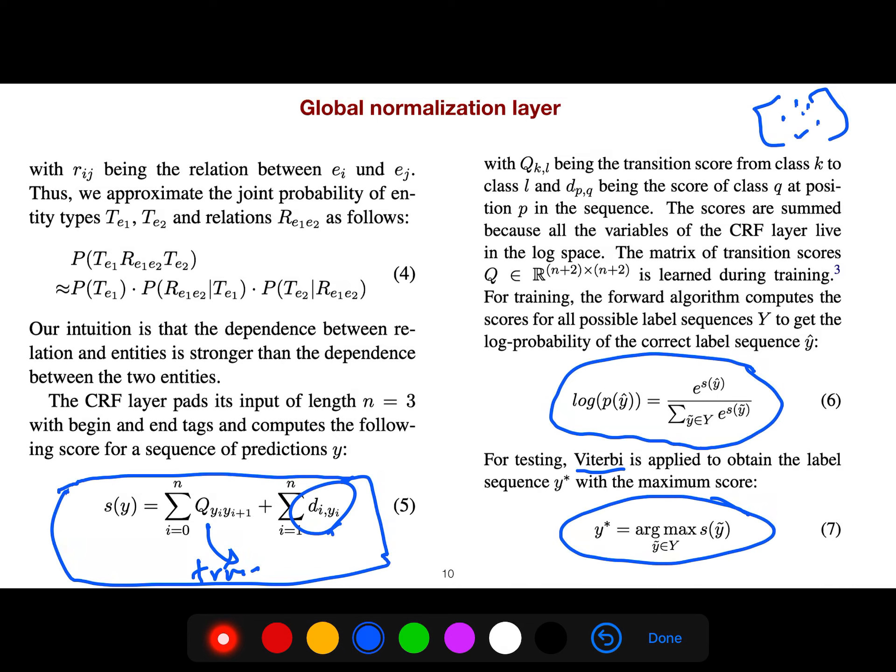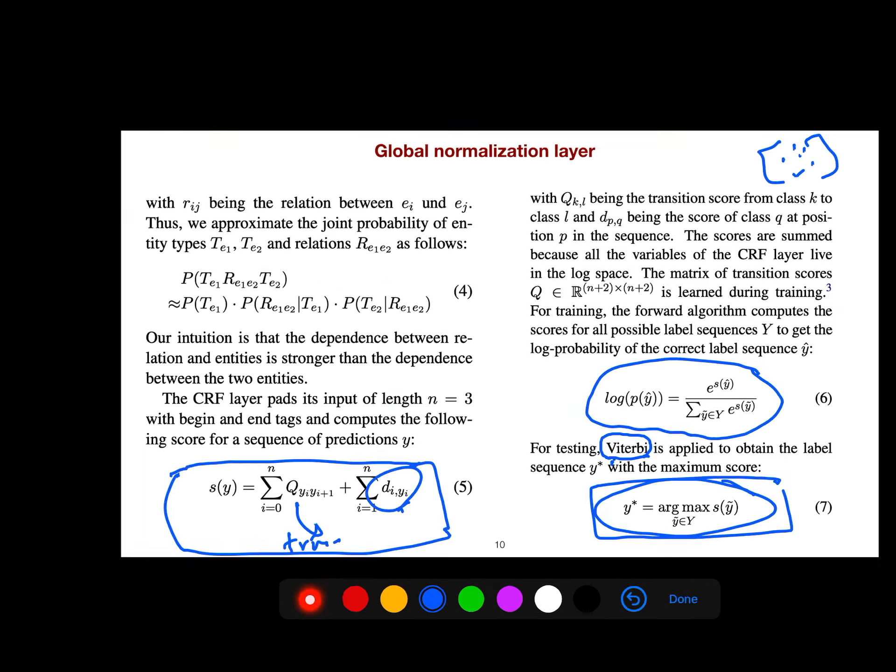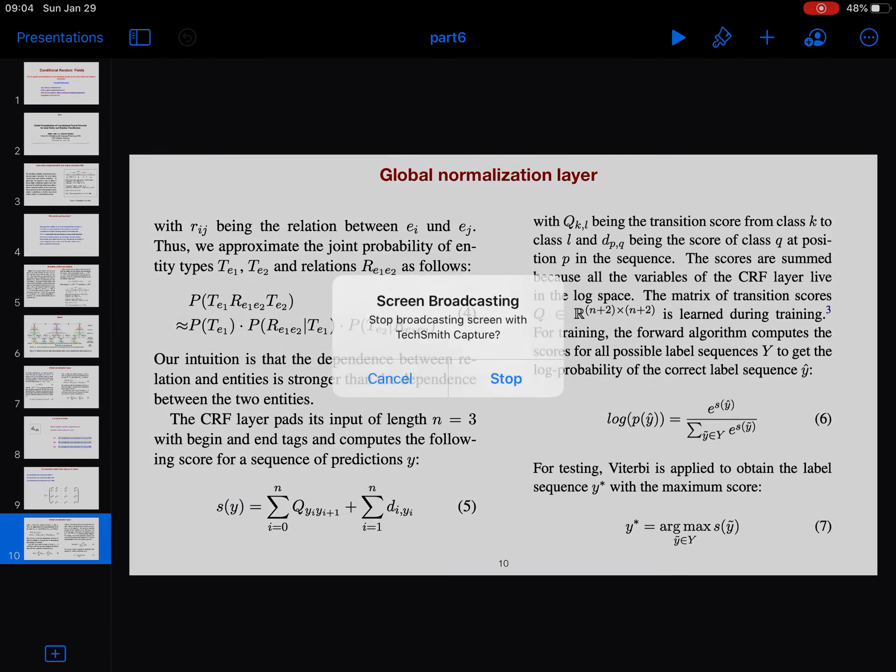Using Viterbi, we can easily calculate this, as I explained in the previous lectures. We implemented the Viterbi algorithm in PyTorch. Now you can calculate the argmax to get the best label sequence.